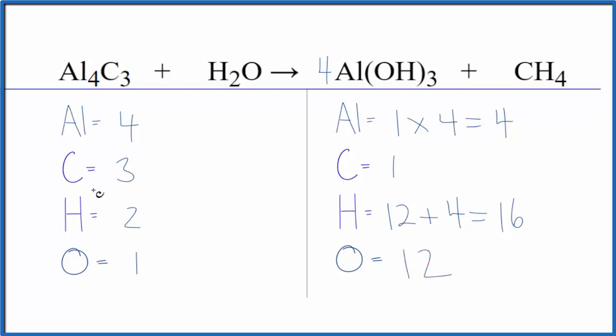Let's update the carbons next, because we could just put a three in front of the methane. One times three, that would give us three carbons. That would be good, and we need to update the hydrogen atoms now. So we have our three times the one, three times four is 12, plus three times four again, 12. That gives us 24. This is looking a little complicated.